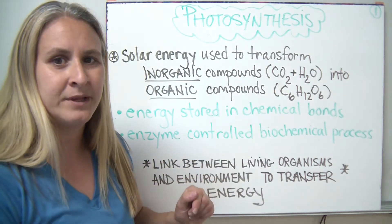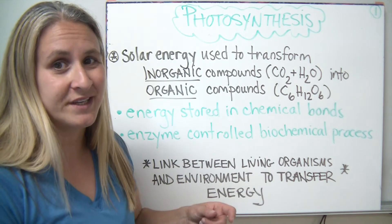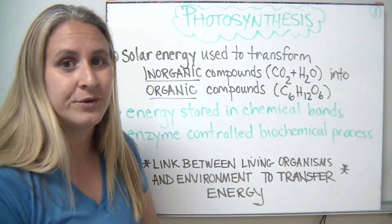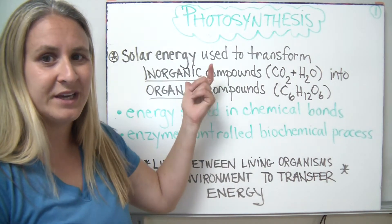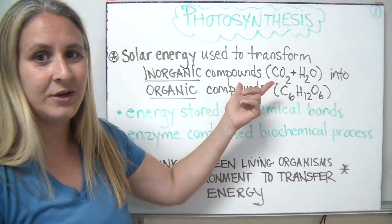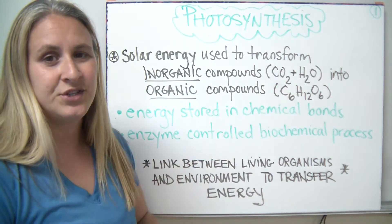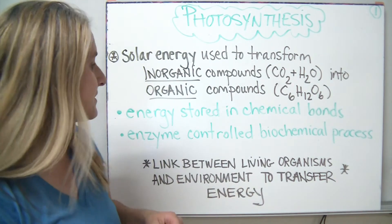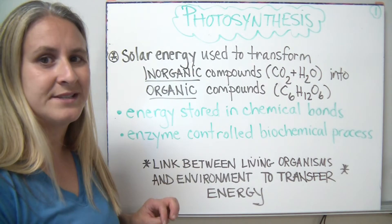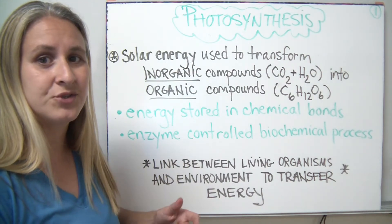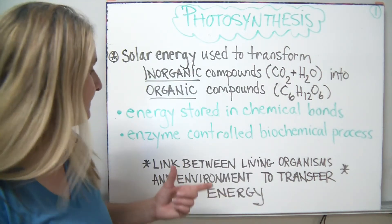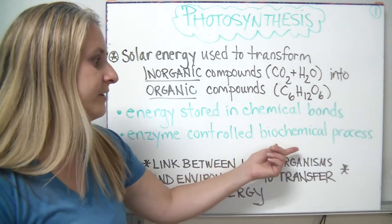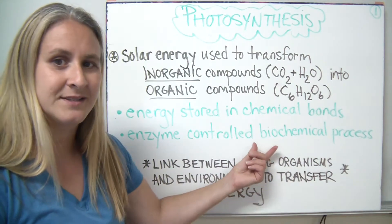Do you recognize that formula? You're right if you said glucose. C6H12O6 is the formula for glucose. We're going to transform the energy from the sun and the inorganic compounds into a type of carbohydrate — the most common one we refer to as glucose. During this process, the energy from the sun is stored in the energy of the chemical bonds of the sugars. The entire process is controlled by enzymes. We call this a biochemical process.